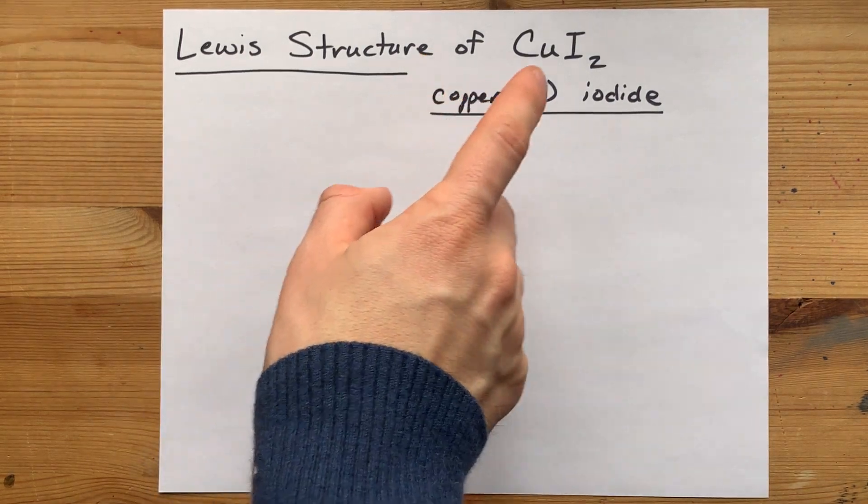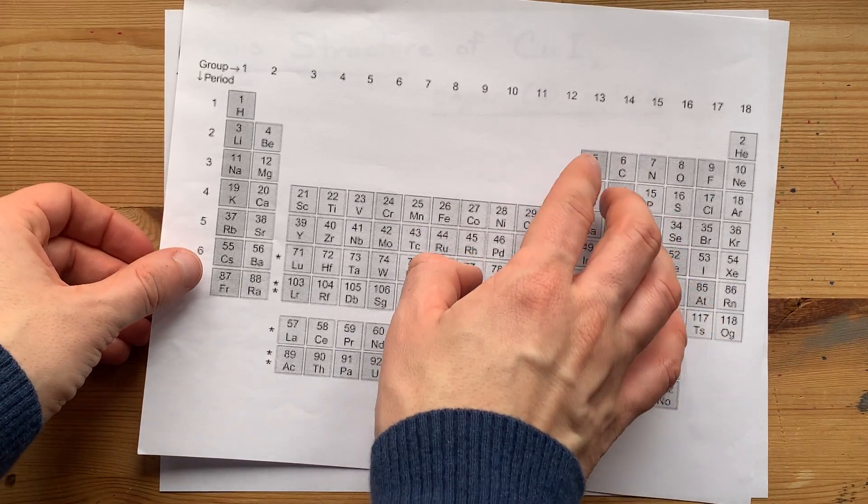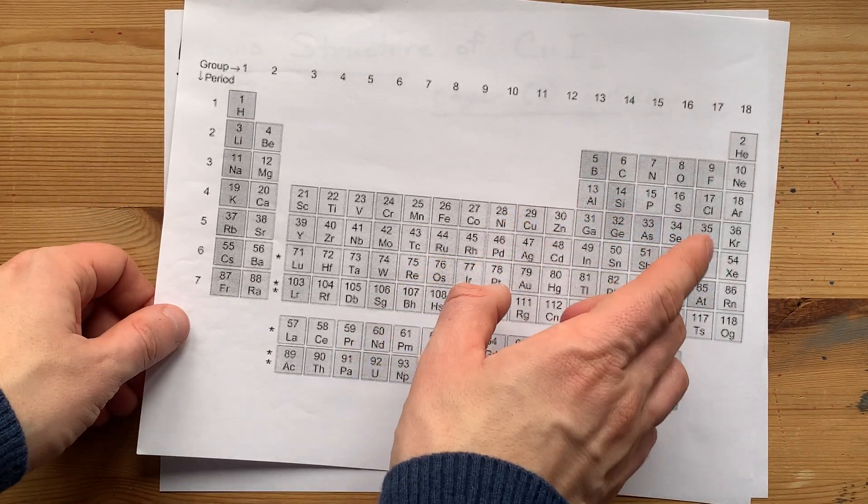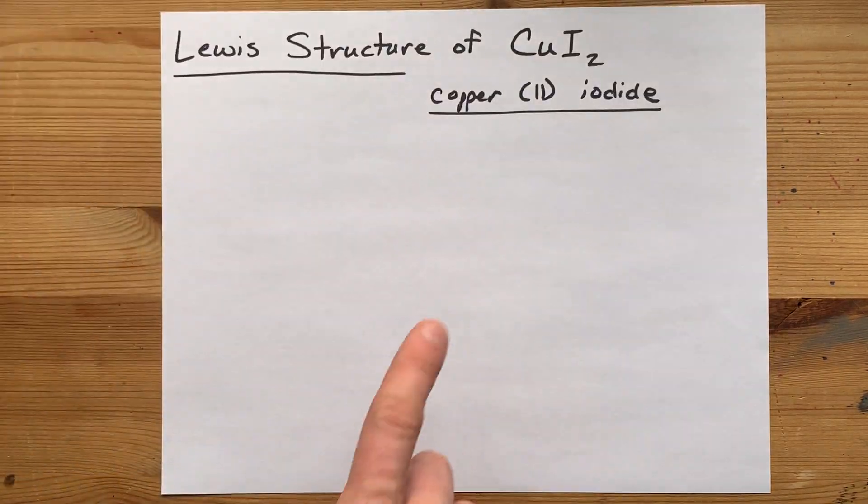The Lewis structure of copper(II) iodide. Copper comes from the left-hand side of the staircase, so it is a metal, and iodine comes from the right-hand side of that staircase, so it's a non-metal.